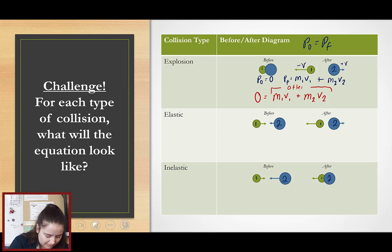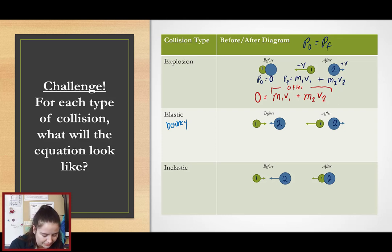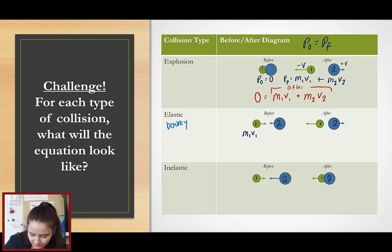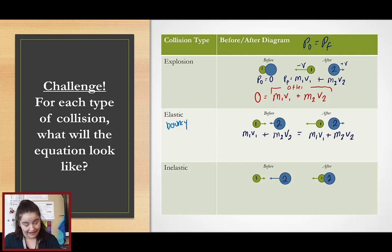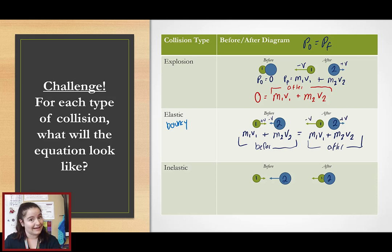Now, elastic collisions — these are our bouncy collisions. As we can see here, both objects have momentum before and after the collision. What that means is that it's not too easy to simplify. We will really just have M1·V1 plus M2·V2 before the collision equals M1·V1 plus M2·V2 after the collision. So the before added up equals the after. But again, make sure when you're using these formulas that you set one direction as positive and the other direction as negative.